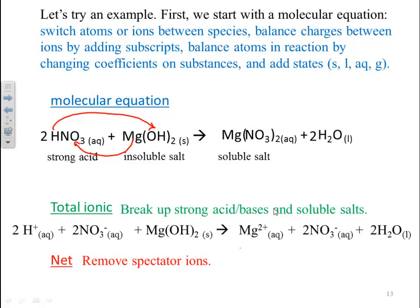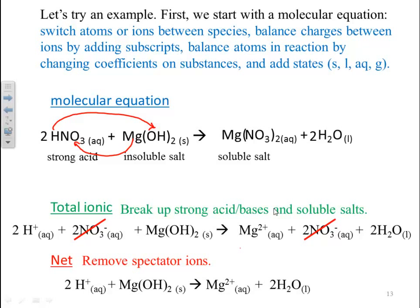For the net ionic, we remove spectators — things that are exactly the same on both sides. We have the nitrates, which are the only species exactly the same on both sides. Those are spectators, so we remove them and bring everything else down, giving us 2 H⁺ plus Mg(OH)2 going to Mg²⁺ plus 2 H2O — that's the net ionic equation, the essential reaction going on.